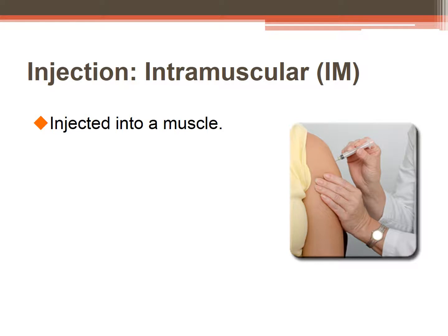The intramuscular route for medications provides quick absorption because of the plentiful blood supply to the muscles. This route is commonly used for antibiotics and immunizations. For administration, the skin is usually held taut and the injection is given at a 90 degree angle. You must always aspirate — meaning pull back the plunger — before injecting the medication to check for accidental placement into a blood vessel.